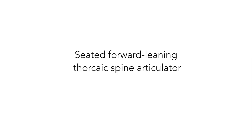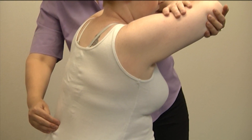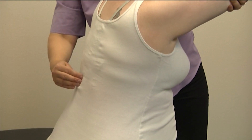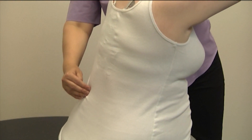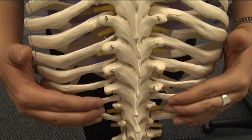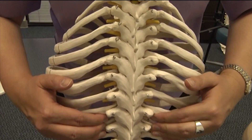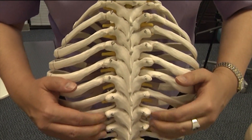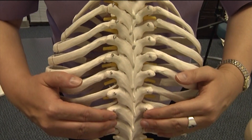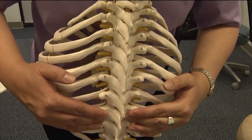The first technique is the seated, forward-leaning thoracic spine articulator. The subject sits facing the physician. The thoracic spinous processes are identified. Contact is on the transverse process of a spinal segment or on the costotransverse junction. The force exerted by the physician is in the anterior direction with rotation and/or side bending added to approach the restrictive barrier.